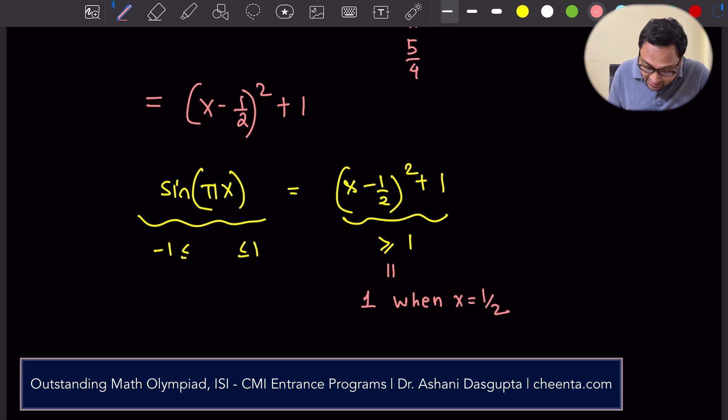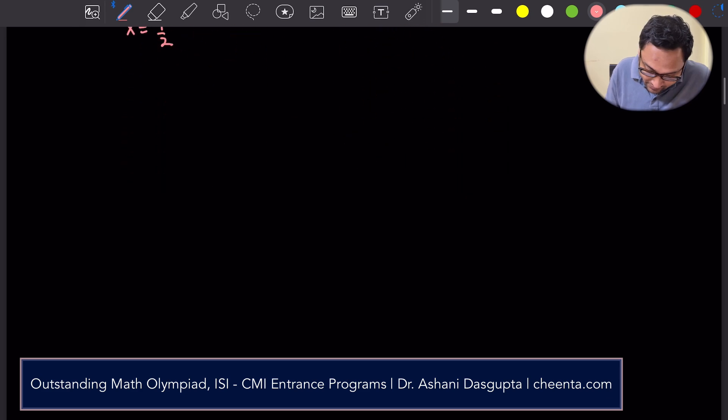Luckily, the left-hand side also becomes 1 when x is equal to half. Therefore, there is only one solution and that is x equals to half. Only one solution. I want you to use the graphical format to understand this problem as well because it is a learning experience. After all, we are doing this for learning how things work, right?